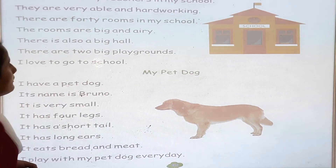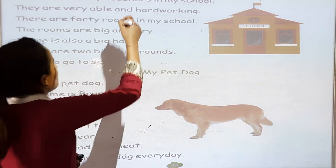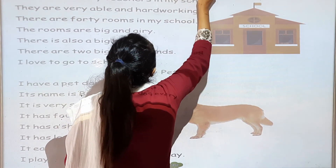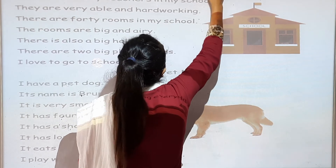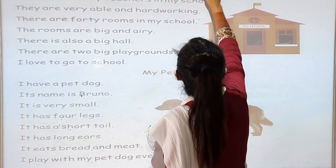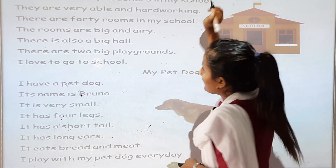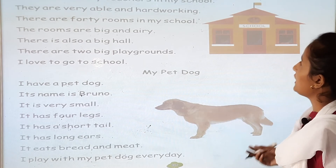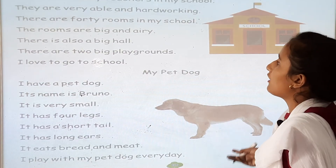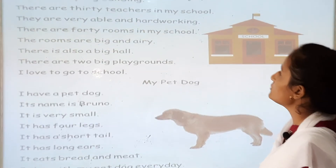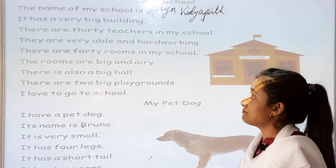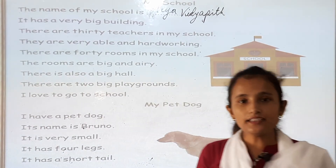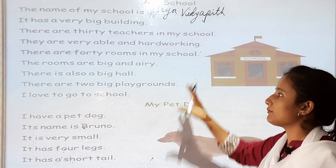Next page: About your school. My school — the name of my school is Arya Vidya Peet. It has a very big building. There are 30 teachers in my school. They are very able and hardworking. There are 40 rooms in my school. The rooms are big and airy. There is also a big hall. There are two big playgrounds. I love to go to school. So you are writing about your school.